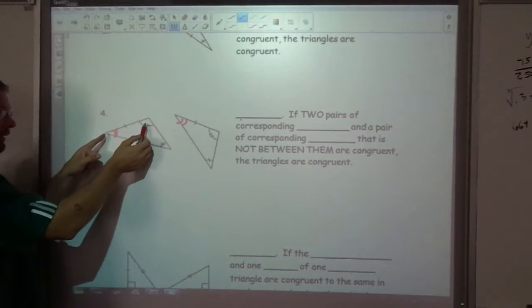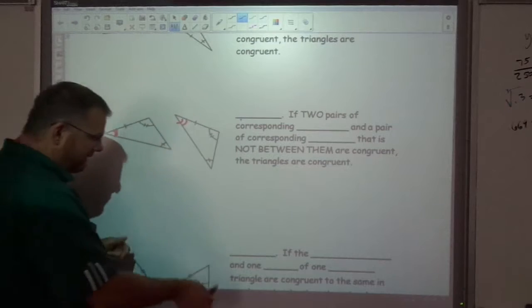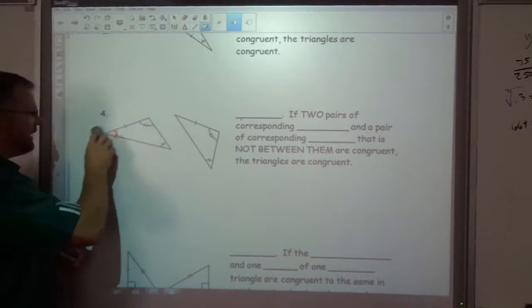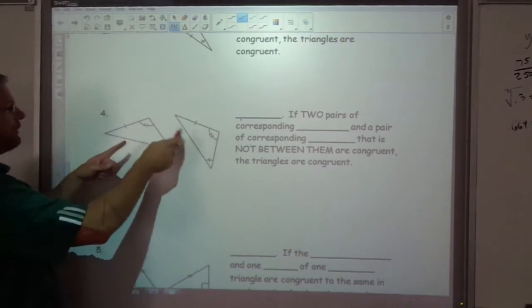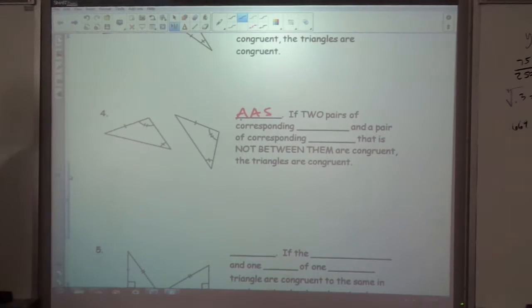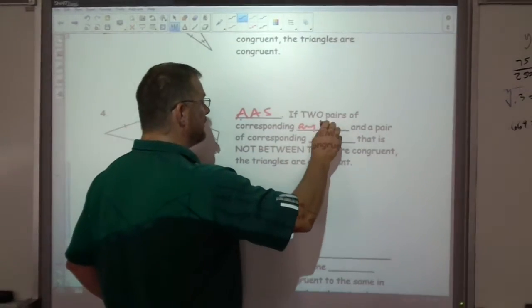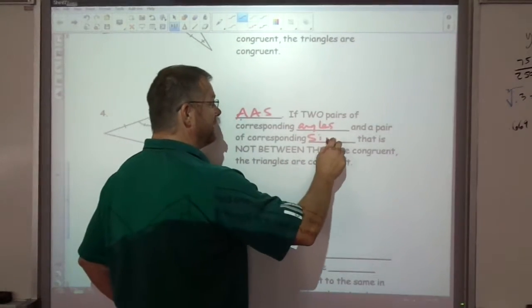And then really we still have angle, angle, side, or angle, side, angle, which we had before. But that's why this is enough if we just have angle, angle, and a side that's on the outside, that's still enough to prove they're congruent. Two pairs of corresponding angles and a pair of corresponding sides.